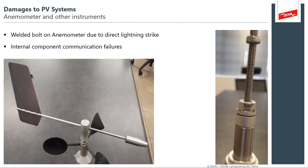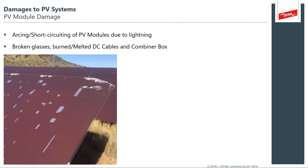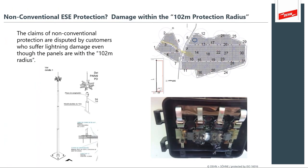We can see coaxial cable damage on camera systems, damage into ethernet and communications cards. There's all sorts of other equipment out at solar fields, like wind anemometers, showing damage that looks like welded bolts — not always obvious. And of course there's solar panel damage where you'll have whole sections with broken glass.